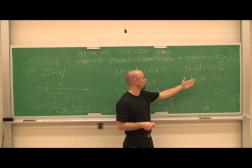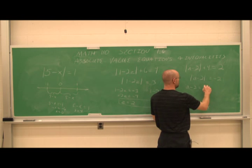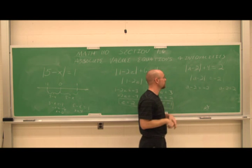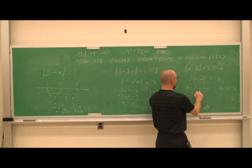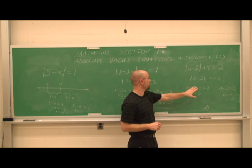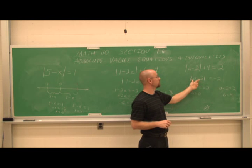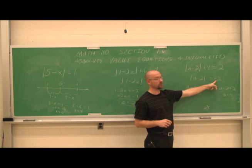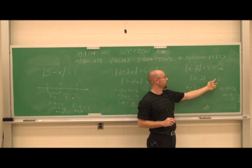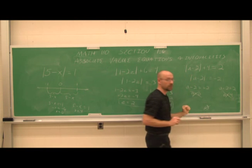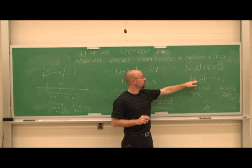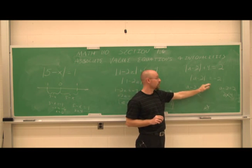But what if I didn't recognize that and worked through it anyway? I'd write two equations: a minus 2 equals negative 2, and a minus 2 equals positive 2. Solving gives a equals 0 or a equals 4. But when I check: 0 minus 2 is negative 2, the absolute value of negative 2 is positive 2, which is not equal to negative 2 — that doesn't work. If I try 4: 4 minus 2 is 2, and the absolute value of 2 is not equal to negative 2. So neither solution works. As long as we check our answers, we'll find there is no solution — but we should recognize this early to save time.